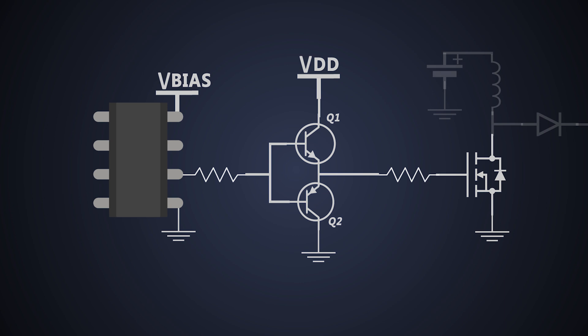Even though the totem pole driver is built from the discrete components, it has its own requirements. It needs its own bypass capacitor placed across the collectors of upper NPN and lower PNP transistors. We should add a smoothing resistor or inductor between bypass capacitor of the driver and bypass capacitor of the PWM controller for increased noise immunity.